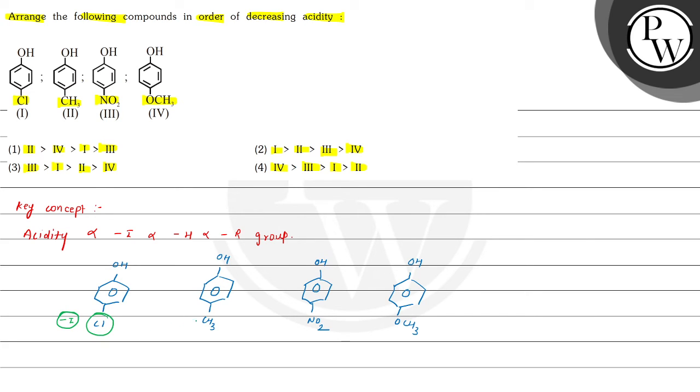The CH3 group shows +H effect or we can say +I effect. The nitro group shows -R effect, and the OCH3 group shows +R effect.